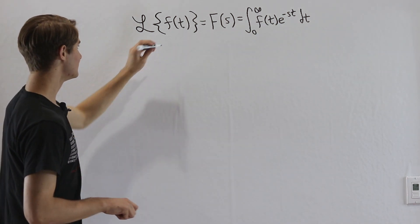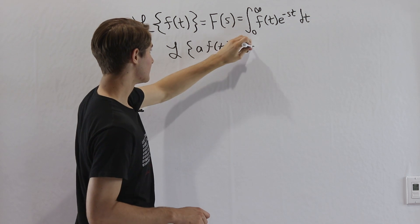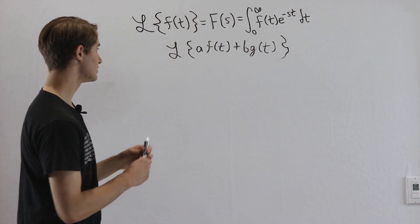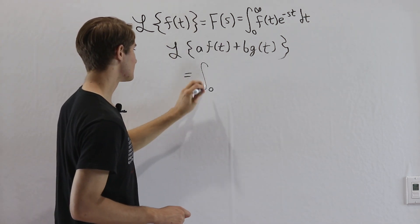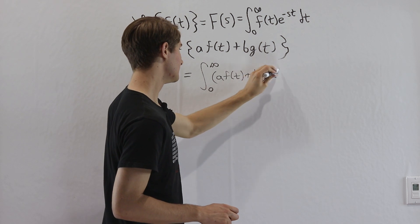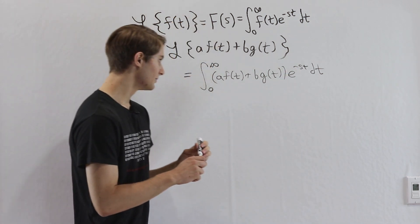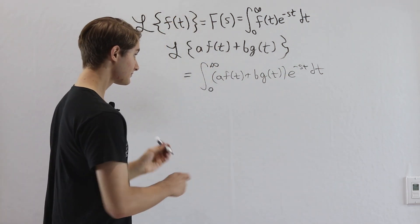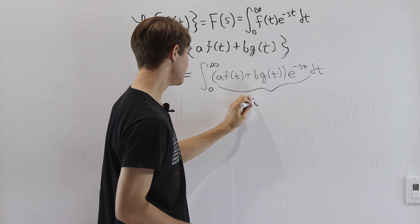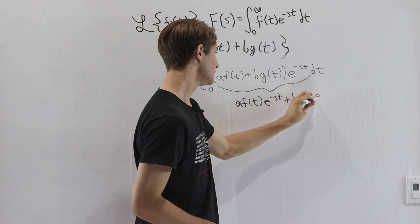The first property is linearity. We look at the Laplace transform of a times some function f(t) plus b times some other function g(t). Using the definition, this equals the integral from 0 to infinity of a·f(t) plus b·g(t), all times e to the negative st dt. We can distribute inside the integral to get a·f(t)·e^(−st) plus b·g(t)·e^(−st).